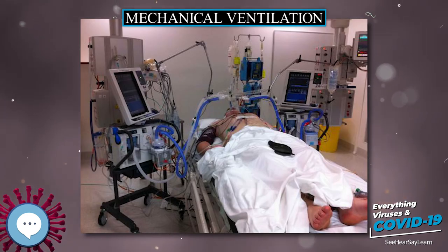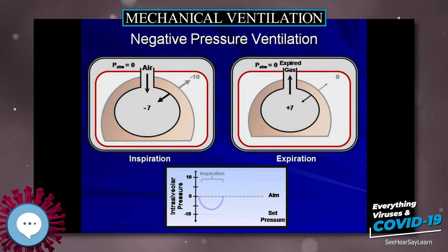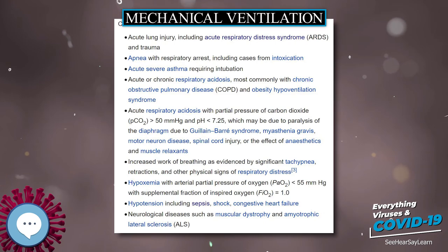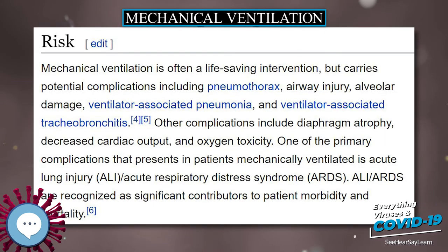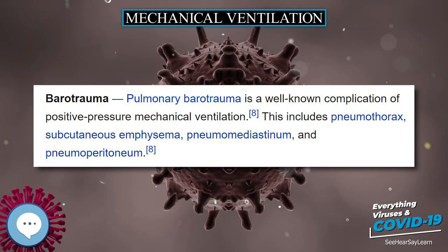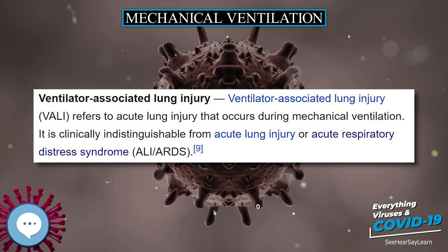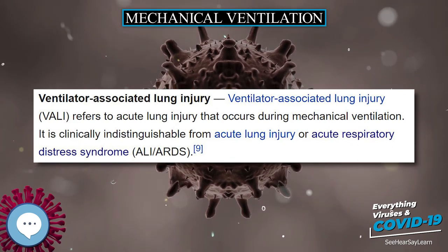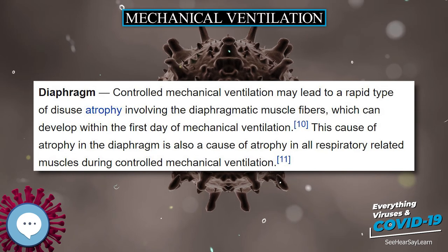Limit is how the breath is controlled. Breaths may be limited to a set maximum circuit pressure or a set maximum flow. Exhalation in mechanical ventilation is almost always completely passive. The ventilator's expiratory valve is opened, and expiratory flow is allowed until the baseline pressure, PEEP, is reached. Expiratory flow is determined by patient factors such as compliance and resistance. Mechanical dead space is defined as the volume of gas breathed again as the result of use in a mechanical device.